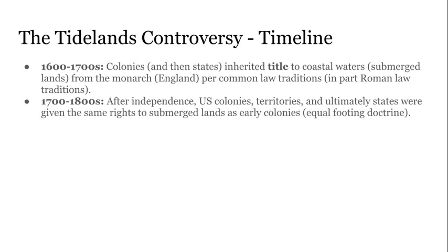In the 1700s and 1800s, after independence, US colonies — which became territories and then states — were given the same rights to submerged land as the early colonies had. Whether they were original thirteen colonies or territories that later became coastal states, they were given the same rights through what we call the equal footing doctrine. This helps us understand why coastal state governments have ownership rights in these submerged land and ocean areas.